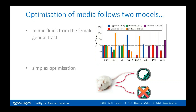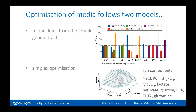Both approaches have their strengths but also their weaknesses. In terms of mimicking female genital tract secretions, there's quite a range in the composition of reproductive tract secretions reported by various authors, so we're not entirely sure which is the best combination of ingredients. Simplex optimization is typically done on a culture medium comprised of 10 components, and the mathematical modeling decides which combination is likely to give the best embryo development. If we consider a medium like Sage One Step, which has over 30 ingredients, we can see that the 10-component model is limited to some extent.